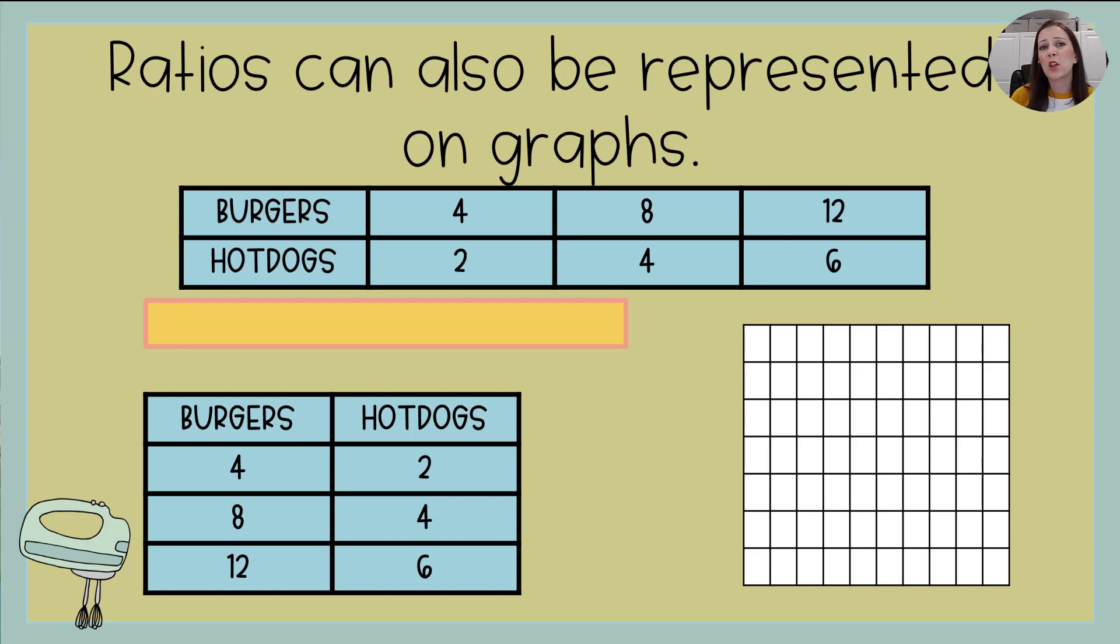So I'm betting that you know from your science class that on the graph, the x-axis is on the bottom. It is horizontal. And the y-axis is on the side. It's vertical. It runs up and down. So now the question is, are the burgers going on the x-axis or are the hot dogs going on the x-axis? Well, I'm glad you asked.